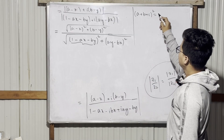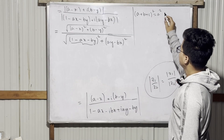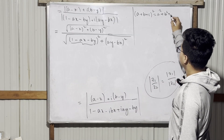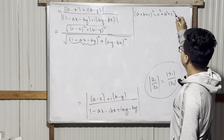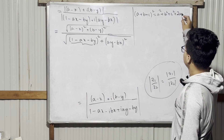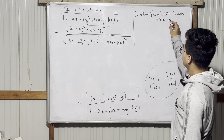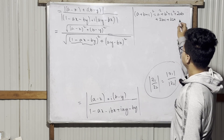This is a squared plus b squared plus c squared plus twice ab plus twice bc plus twice e.